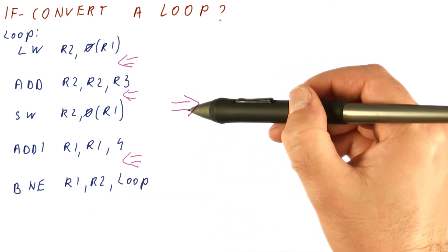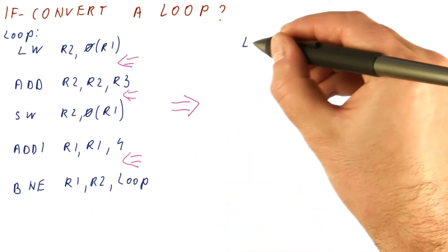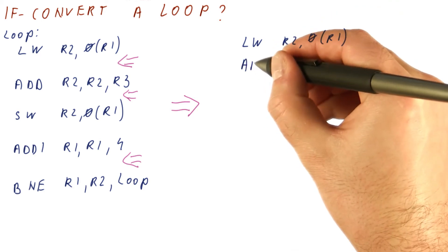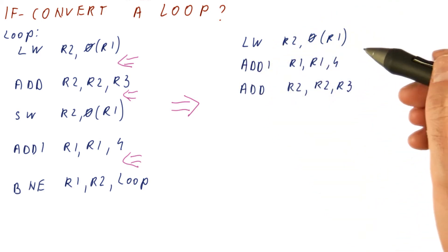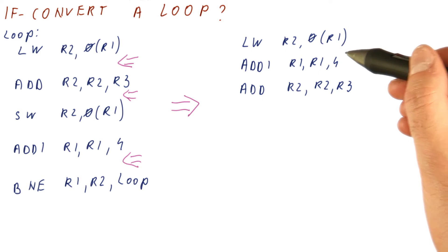We have already seen that we can schedule this loop differently, so that we load, and then we do the ADDI, and then we do the add. This way we avoid the stall cycle here.